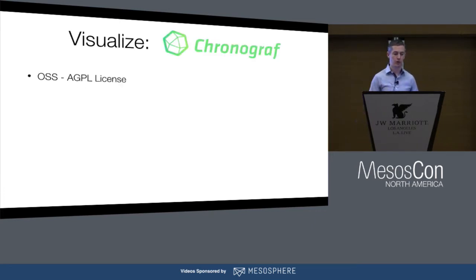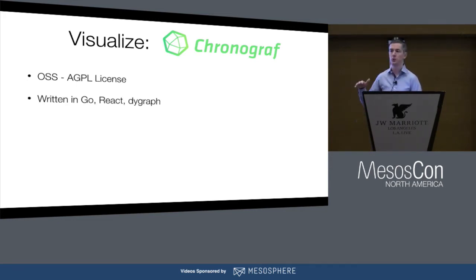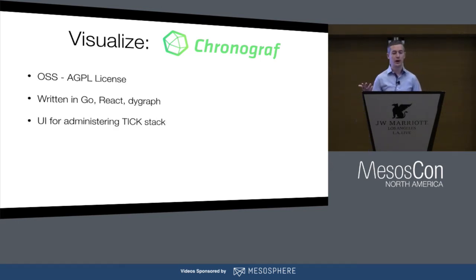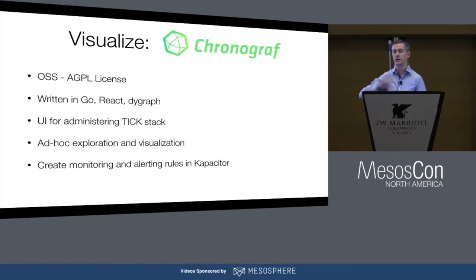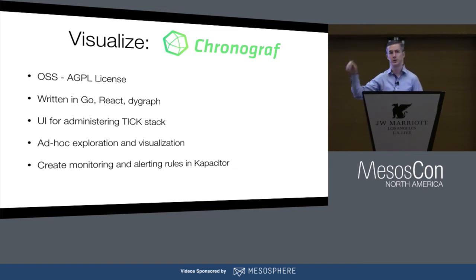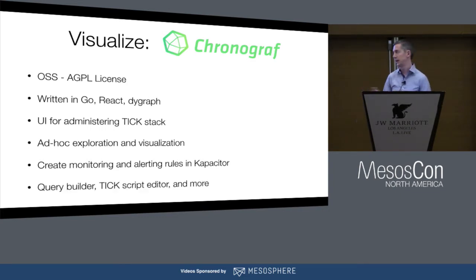For visualization, we have Chronograf. It's open source but AGPL licensed. It's written in Go, and for the JavaScript portions we use React and D3 for visualization. We think of it as a UI for administering the TICK stack, for doing ad hoc data exploration and visualization, and you can also do dashboarding. You can also create monitoring and alerting rules that get injected into Kapacitor — a point-and-click UI where you say, monitor the server, and if the CPU goes above this for this long, trigger an alert. It also has a query builder and a TickScript editor.